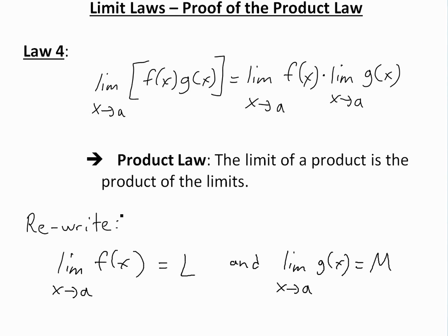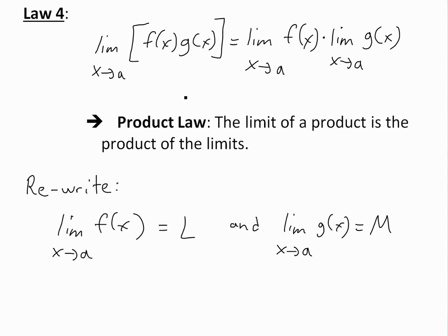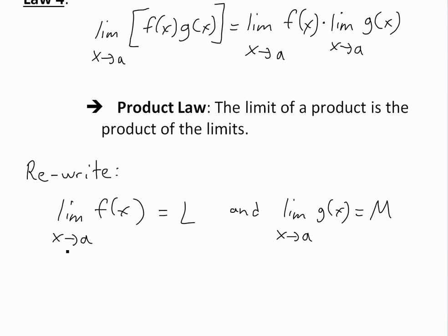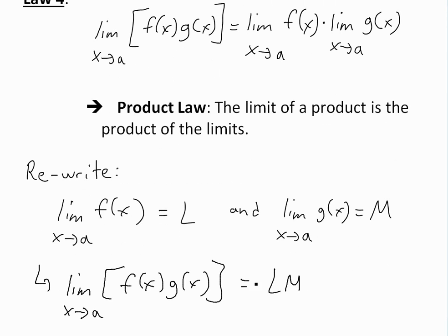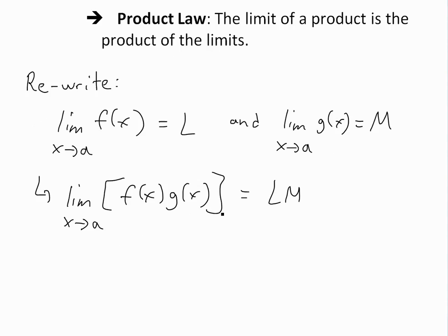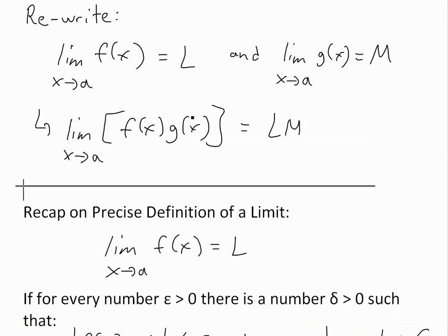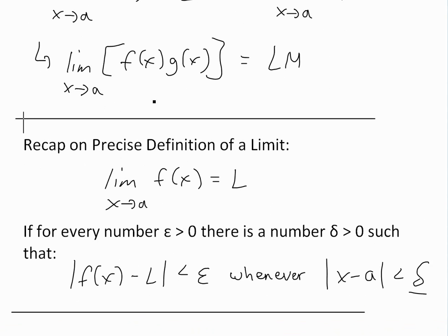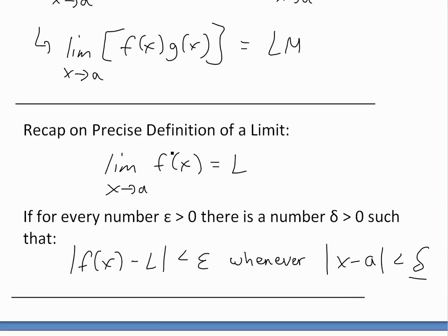Now before I prove it, I just want to rewrite the limits. So the limit of f(x) as x approaches a, we'll just call it L, and the limit of g(x) as x approaches a equals M. So now we're going to have the limit as x approaches a of f(x) times g(x) equals L times M. To prove this limit law, we're going to use the precise definition of a limit.